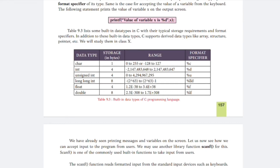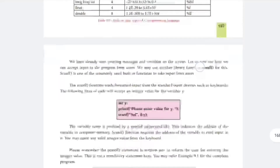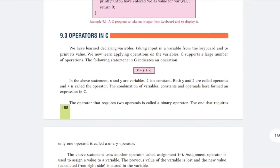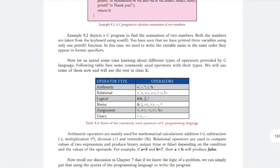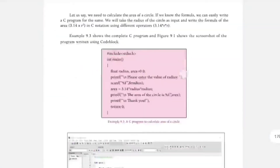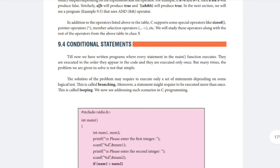You should also learn about operators. What is an operator? Symbols used in expressions are known as operators. Different types include: arithmetic operator, relational operator, logical operator, assignment operator, and unary operator. Examples of arithmetic operators: plus, minus, multiply, divide, and modulus. Relational operators: greater than, less than. Logical operators: AND, OR, NOT.